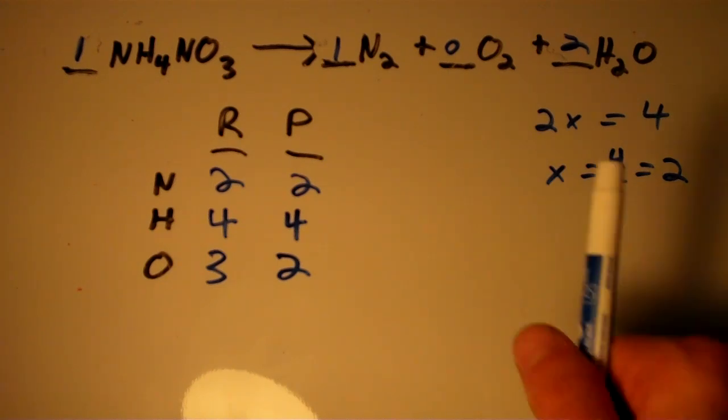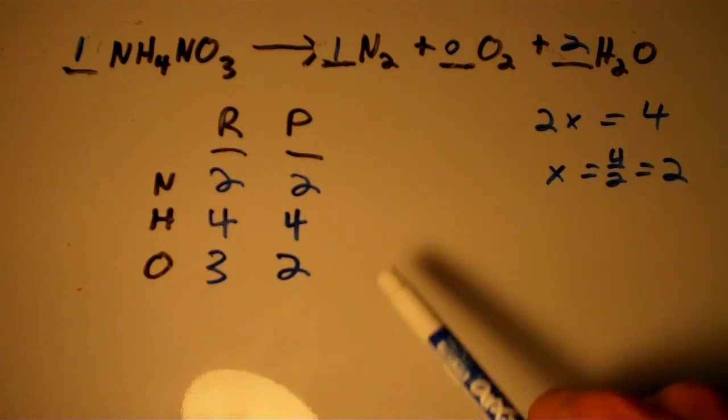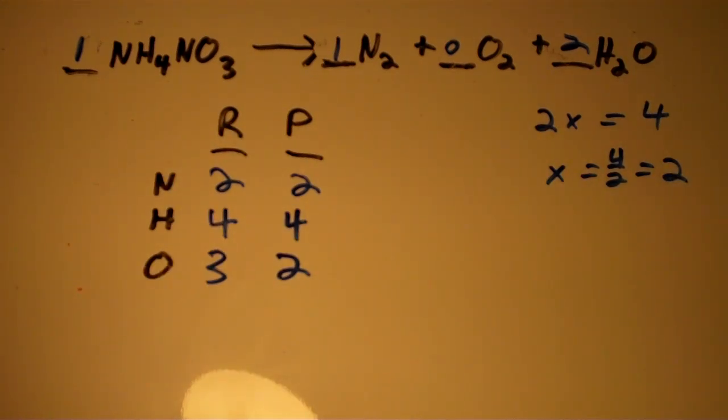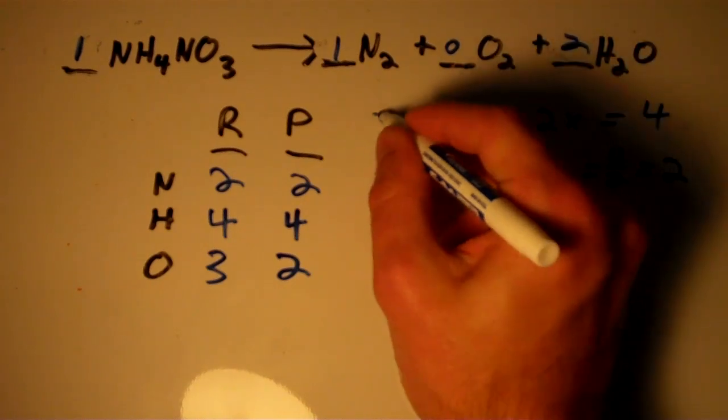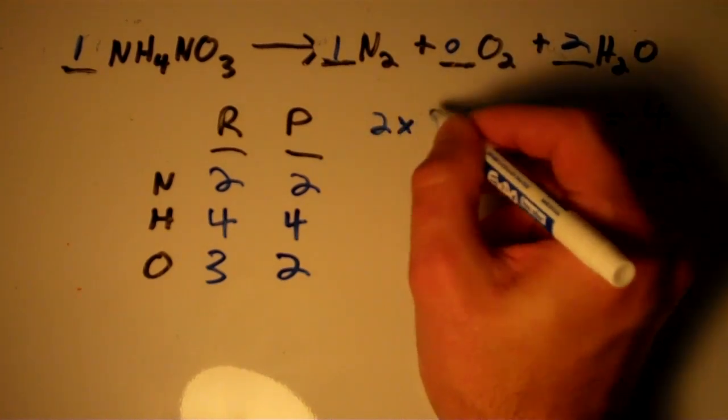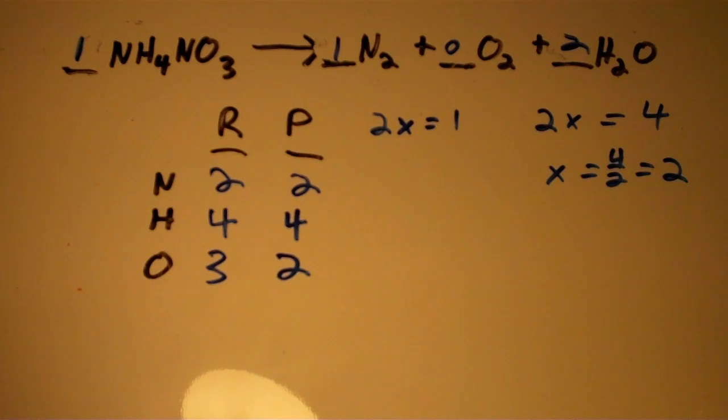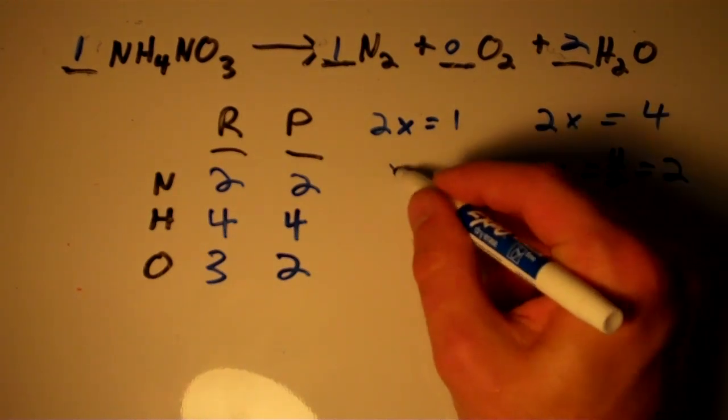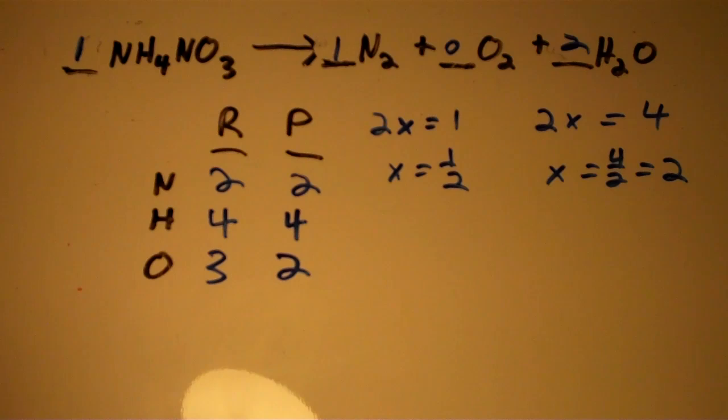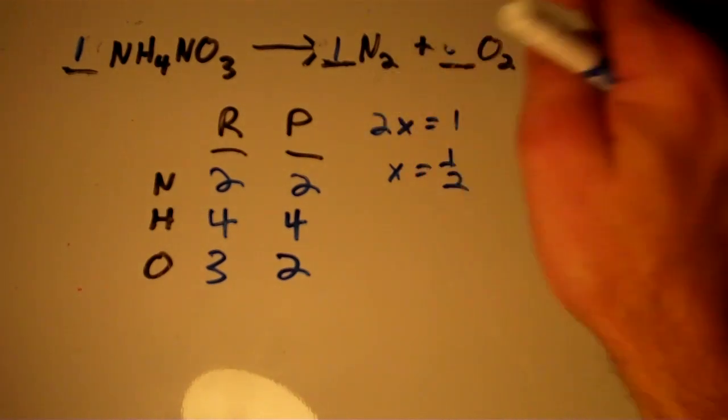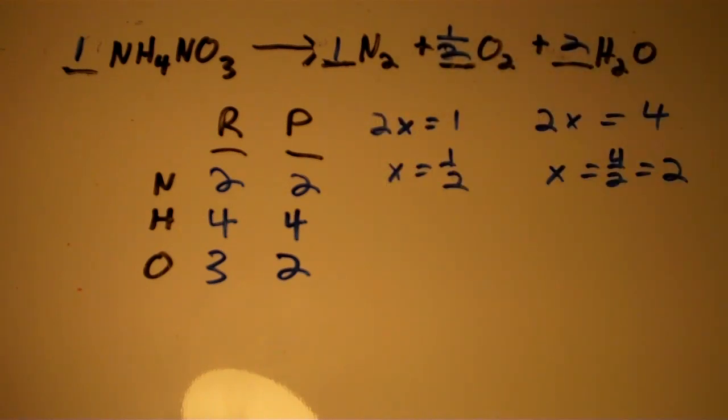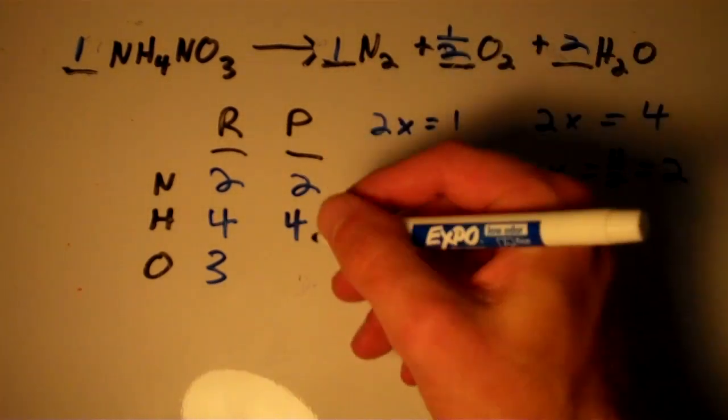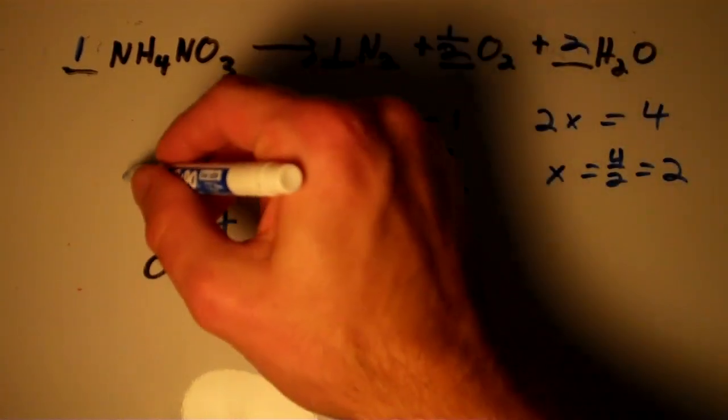Now we're not quite done yet. We still have to balance oxygen. We have three on the left and we have two on the right. Well, two of our oxygens come from this one, so really we only need one coming from this one. So we need two times something equals one. X equals one half. So I'm going to put a one half here. Notice that one half of two is two and that gives you a total of three oxygens on the product.